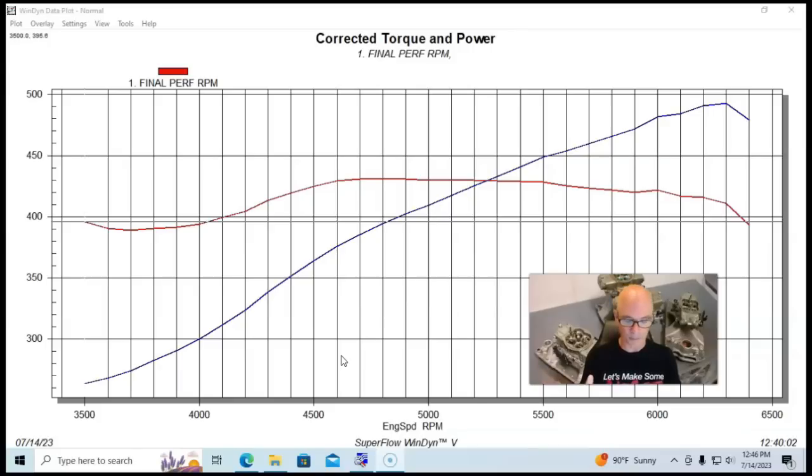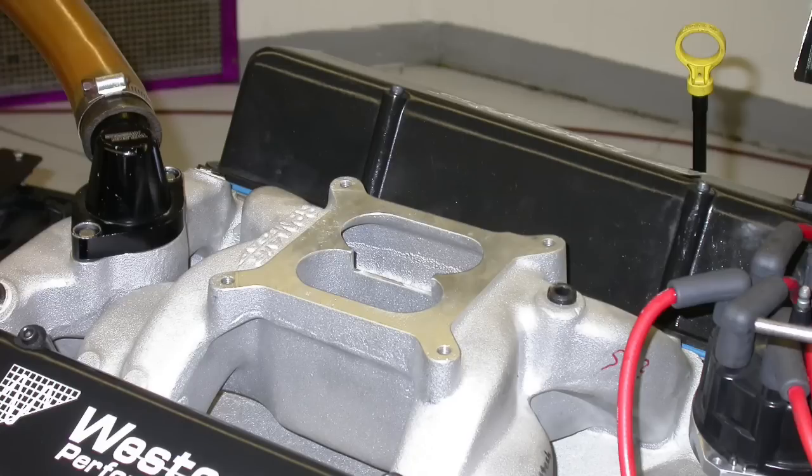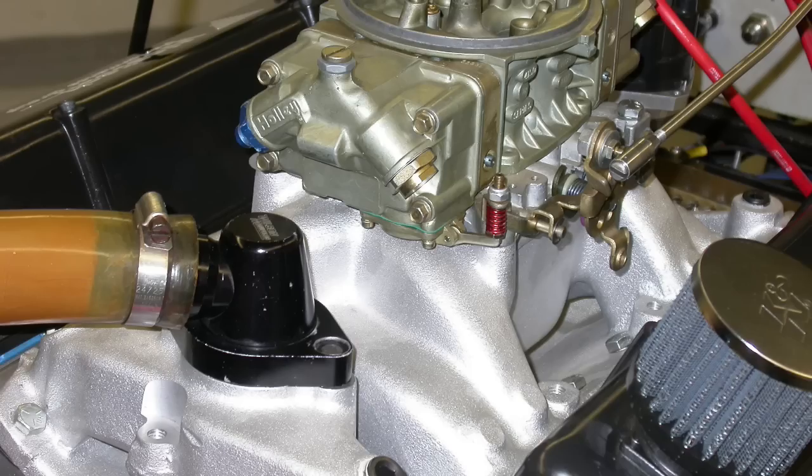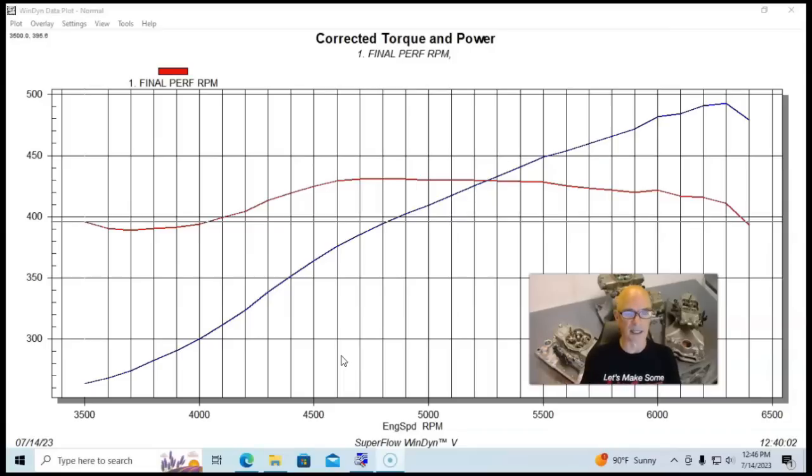We started off our first test with an RPM Air Gap, which is kind of the go-to dual plane intake manifold for a lot of small block Chevy applications, even ones with a good camshaft and compression and good heads like this. We'll take a look and see how that compares: single plane, dual plane, and a Tunnel Ram.